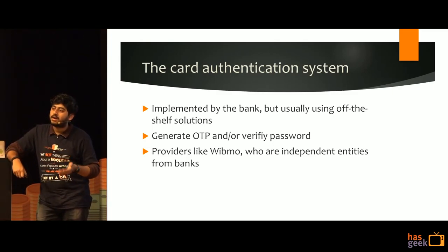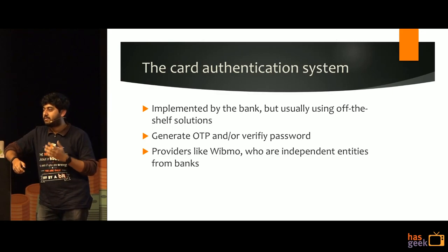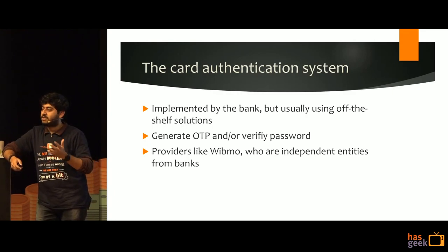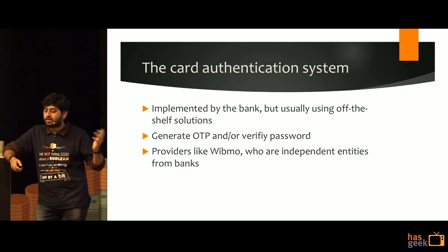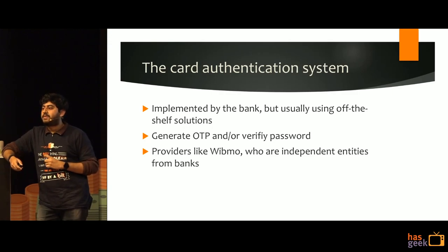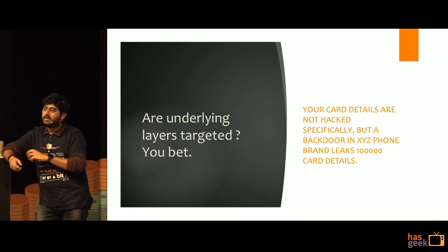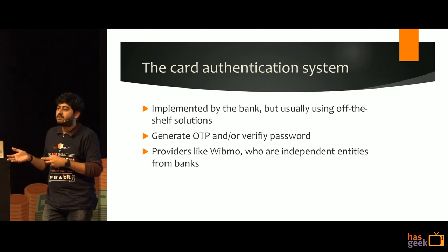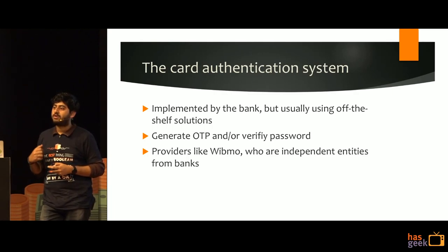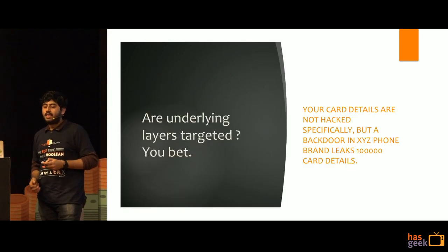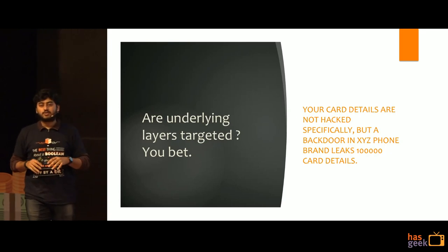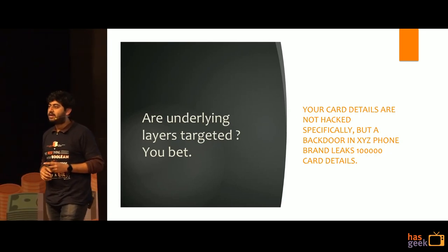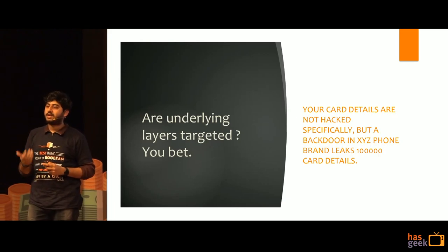Then comes the card authentication system, implemented by your bank. We were entering our Verified by Visa password or OTP. Banks usually use off-the-shelf solutions — Wibmo is one, making it for Axis Bank and ICICI as well. You'll notice the Verified by Visa password page looks similar across all banks because it's an off-the-shelf solution, not built or customized by the bank itself. The question is: are these underlying layers actually targeted? Do we need to worry about them?